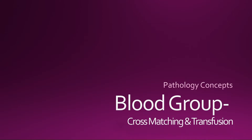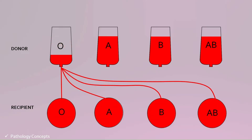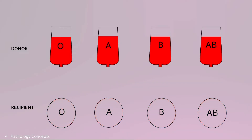Hello and welcome everyone. Today we are going to discuss blood group part 3. In this video we are going to discuss mainly on cross matching and transfusion reactions. First we see which group can be transfused to another. O blood group can be transfused to all — O, A, B, and AB. The O blood group is the universal donor.